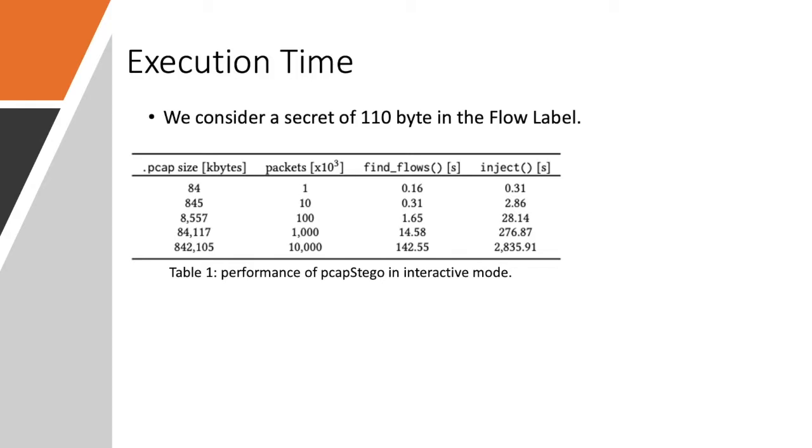So, at first, we measured the execution time needed by the main functions of the tool to inject a secret of 110 bytes within the flow label in the interactive mode. For this test, we used the pcap file composed of different number of packets. And as it's possible to notice, the find flows function, which is the function in charge of finding the conversations that are able to contain the secret, its performance increases with the size of the traffic considered.